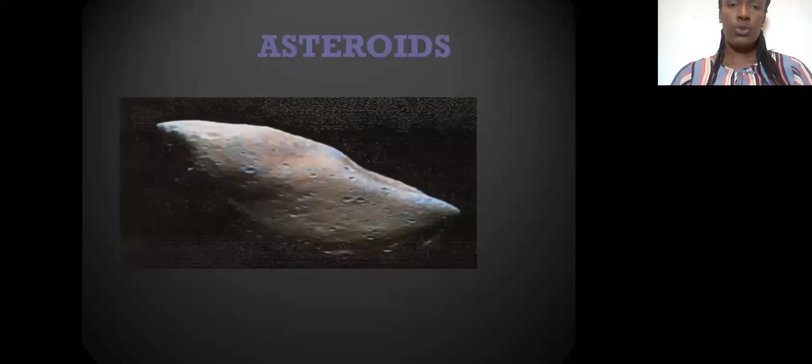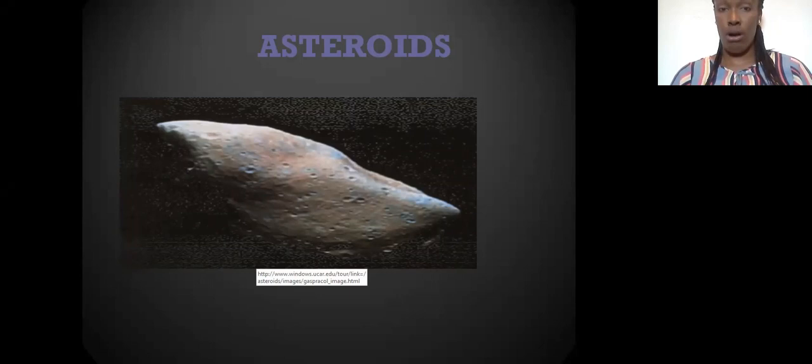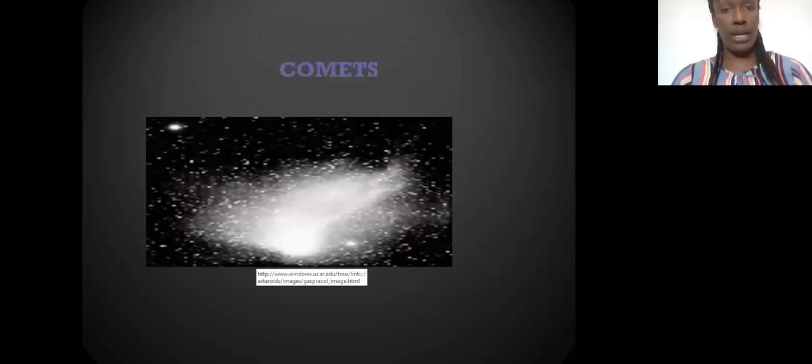Who do not know what an asteroid is? Who can remember it from the vocabulary words? Yes, it is a big large rock. Comet, this is a picture of how a comet looks. Who can remember what a comet is? Yes, it has clumps of dust.